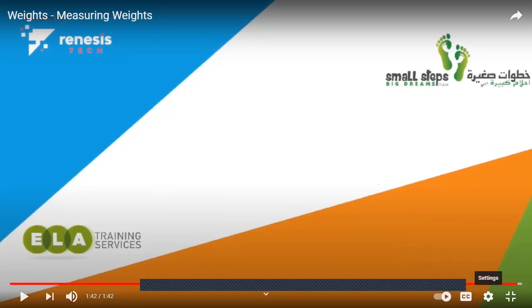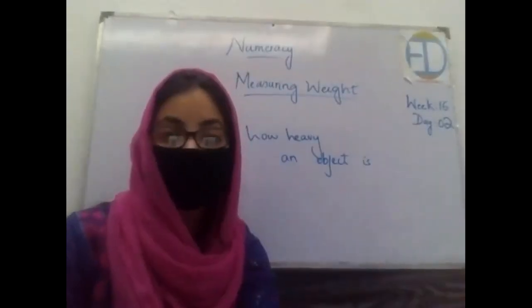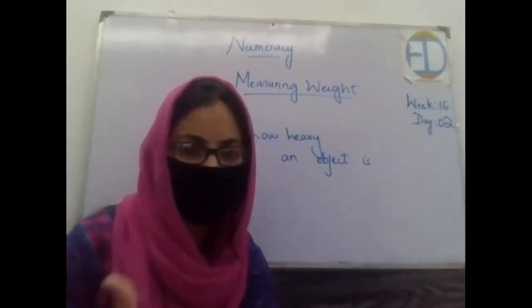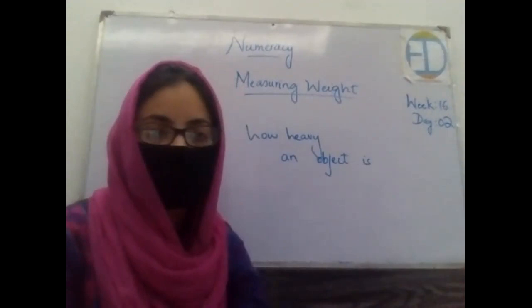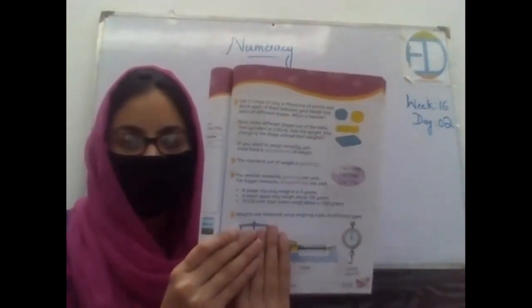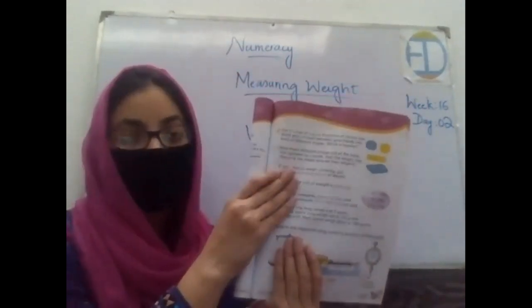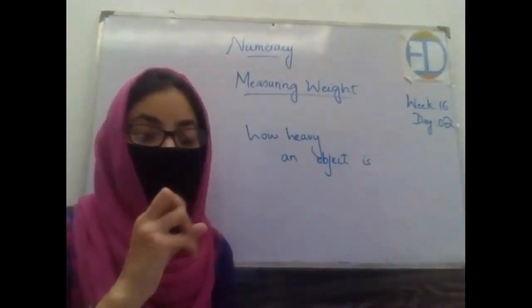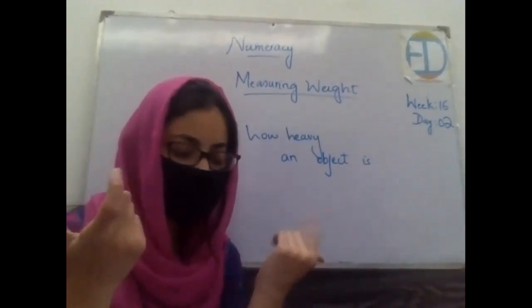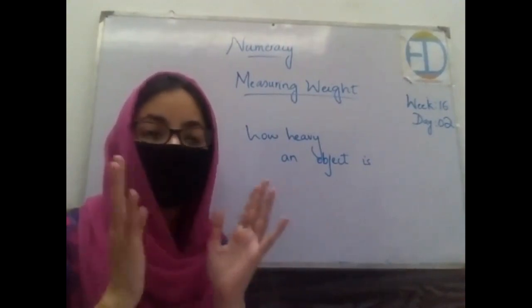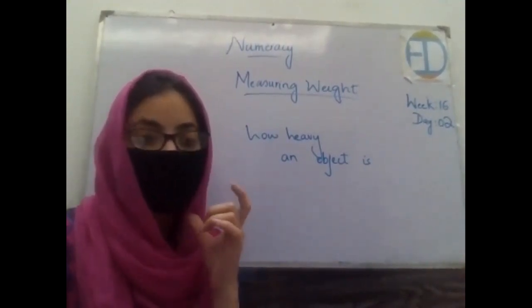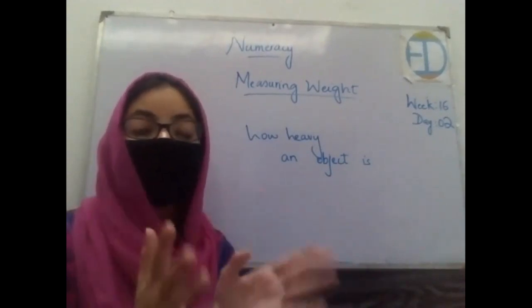The video explained what weight is, how we can measure it, and the different measuring machines we can use. Now I want all of you to open your book to page 81. The first activity we have already done — you take two clay lumps of different colors of the same size, place them in a spherical or cylindrical shape, then change the shape and observe whether the weight changes.